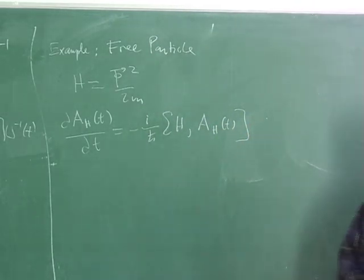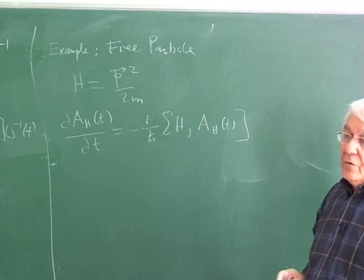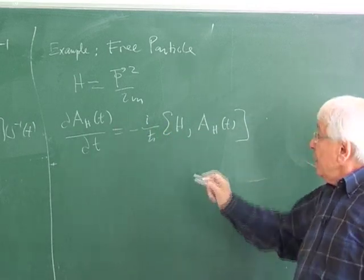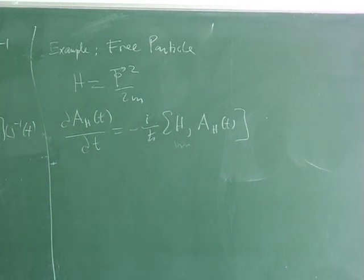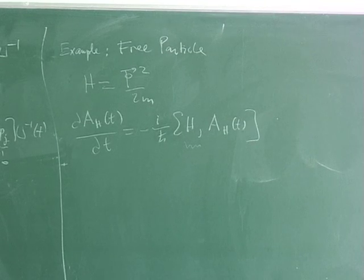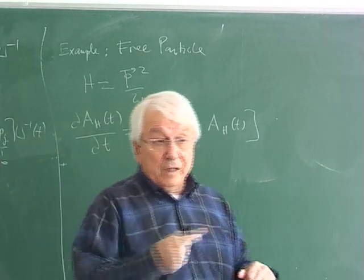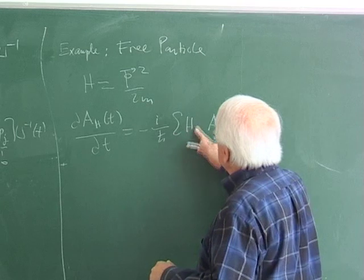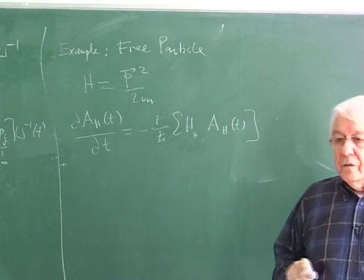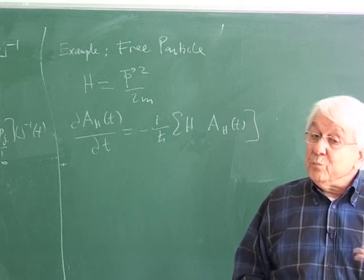Now I am using all indices and time dependences correctly. A could be any operator — x, p, or anything else. Here is the important question: is H time-dependent? We have to settle that first. Well, the Hamiltonian is the same in the Schrödinger picture and Heisenberg picture — that has been proven. So there is no problem; H is label-free, same in Schrödinger, same in Heisenberg. But there is another problem yet to be settled: is it time-independent?